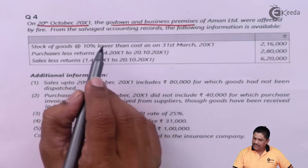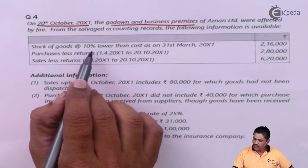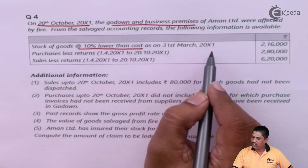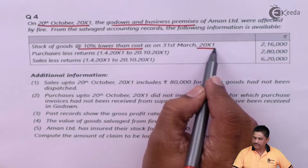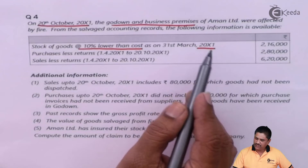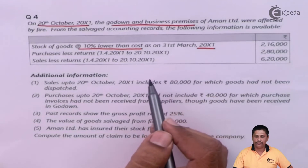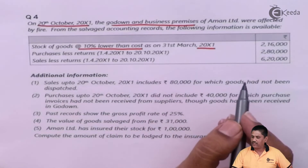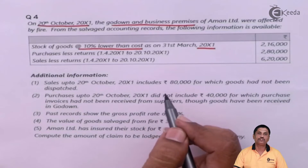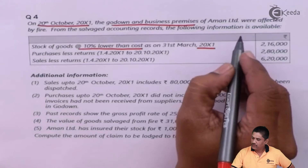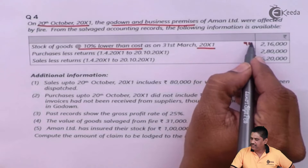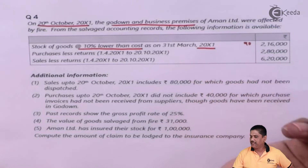Stock of goods at 10% lower than cost as on 31st March 200X1 — this is last year's closing stock, and importantly it is 10% lower than the cost. We know that stock should be valued at cost, so this amount is valued at 90, and I will make it 2,16,000.